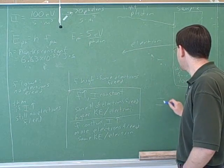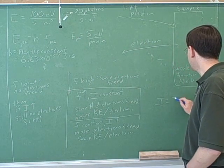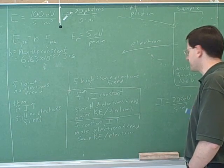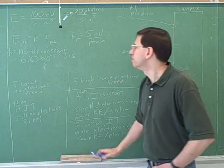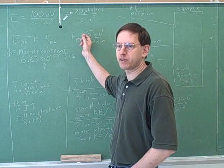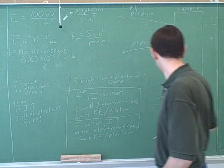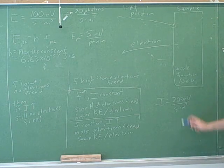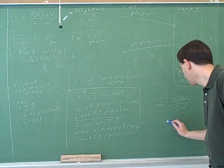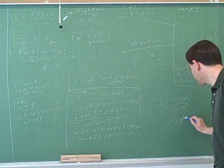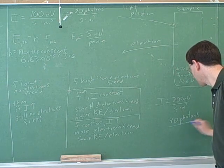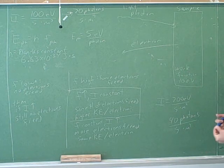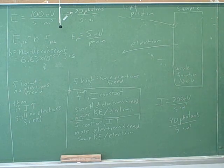Now, let's say that we shifted to an intensity of 200 electron volts per second per square meter. But it's still the same frequency light, so each of the photons still has 5 electron volts per photon. So, how many photons per second per square meter would we be shooting now? Now, we'd be shooting 40 photons per second per square meter because 5 times 40 is 200.